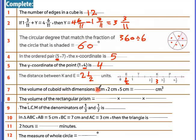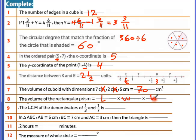The volume of the cuboid with dimensions 7, 2, 5: length times width times height = 2 times 5 is 10, times 7 is 70 centimeters cubed. The volume of a rectangular prism — which is a cuboid — equals length times width times height.